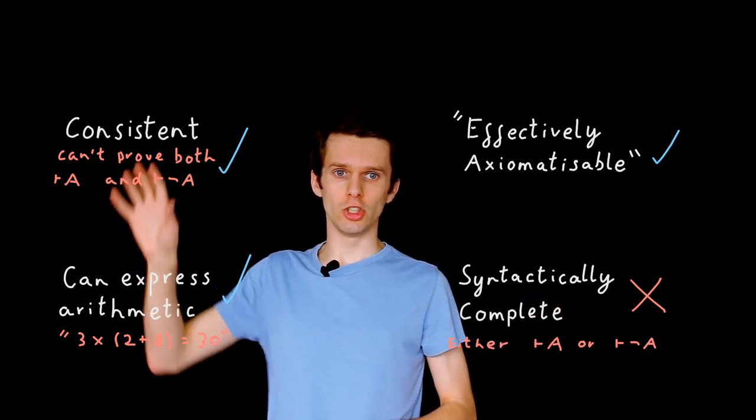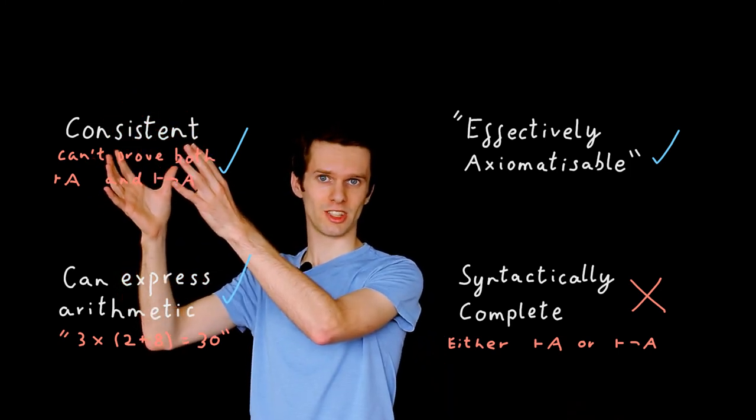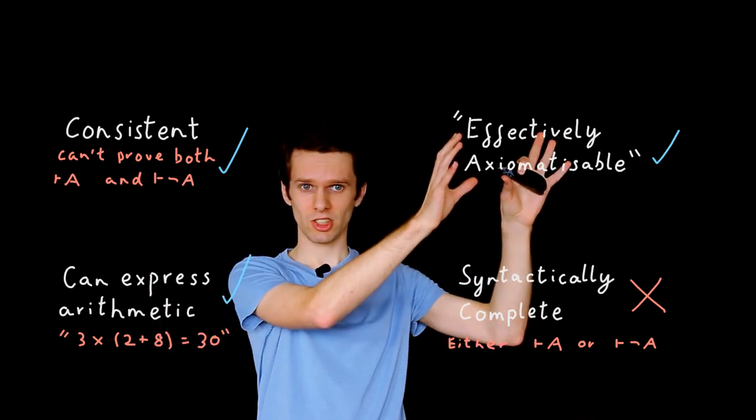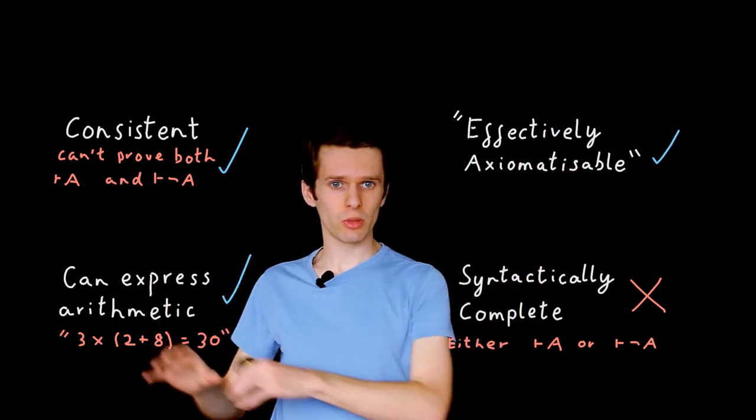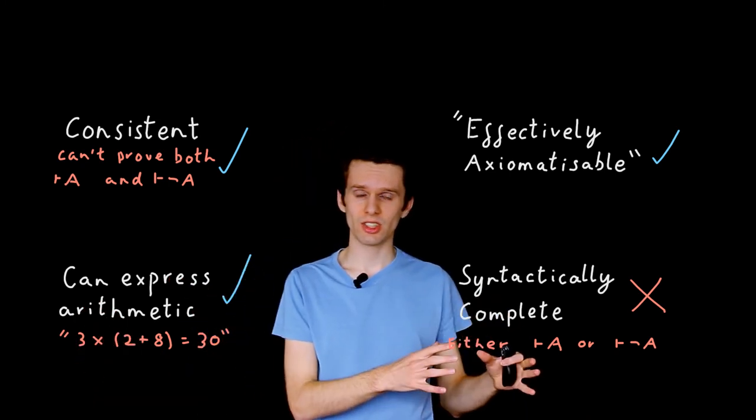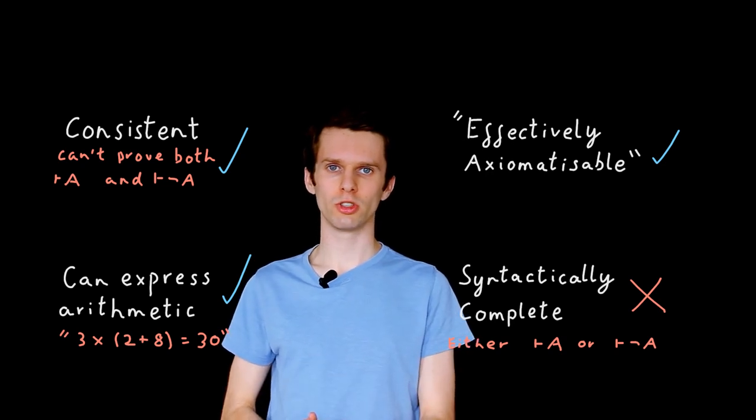So any usefully consistent logic, if our logic isn't consistent it's not particularly useful, with effective axiomatization, and which is sufficiently powerful, will have sentences which we cannot prove to be either true or not true.